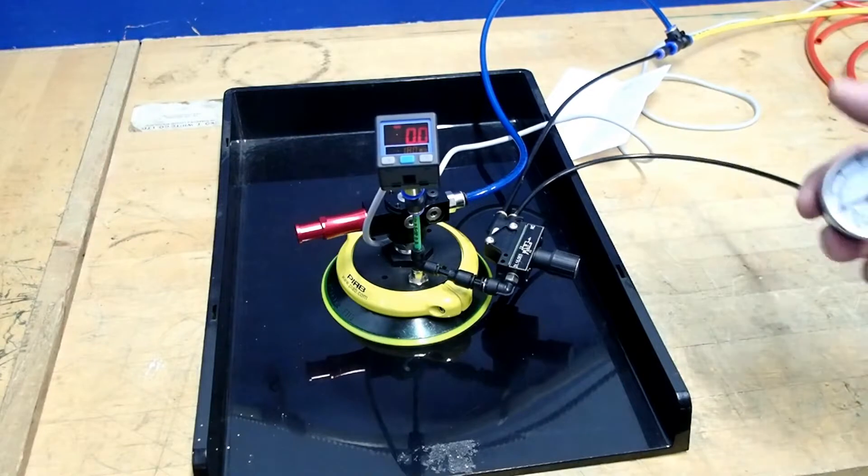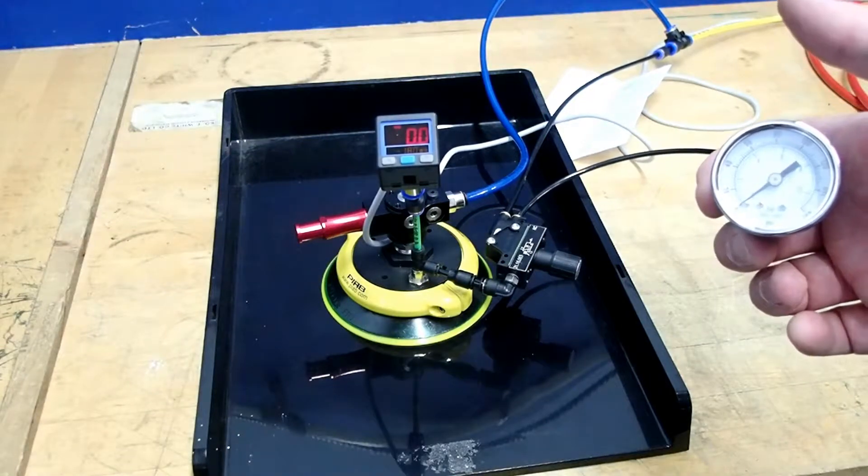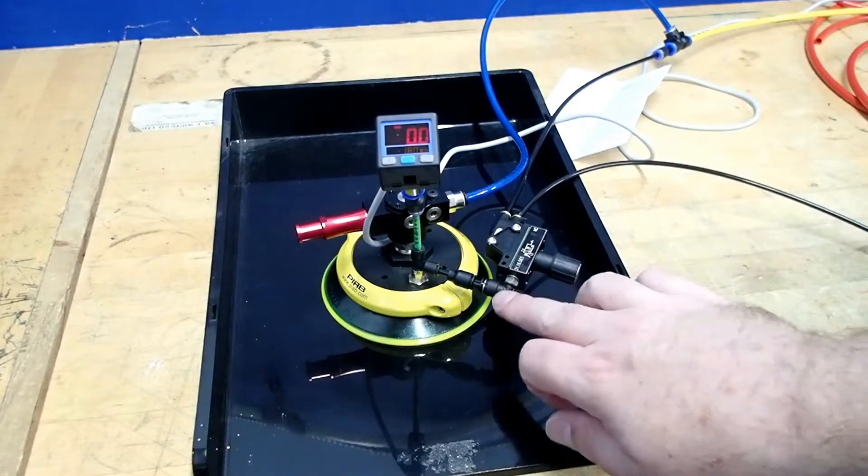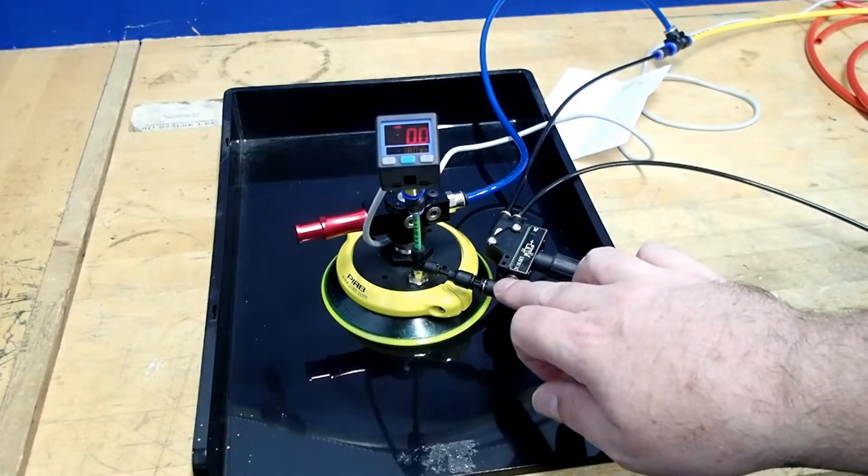Port number two goes to your pneumatic output device, be it a pneumatic eye, pressure gauge, or what have you. Port number three is what senses the vacuum.